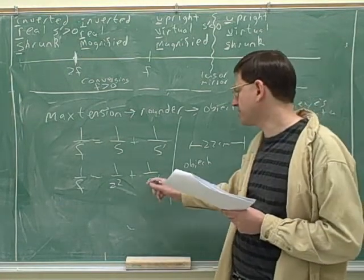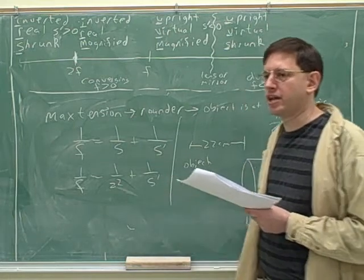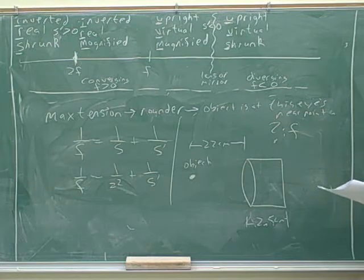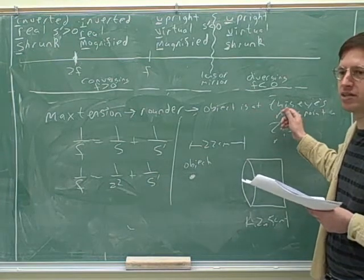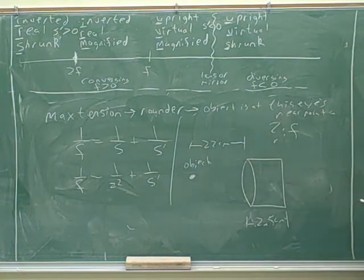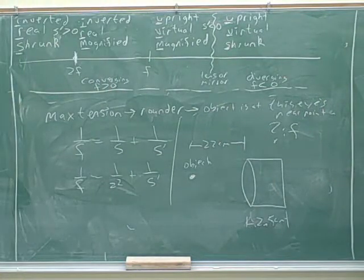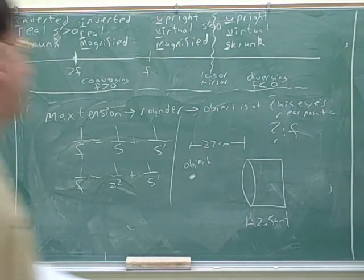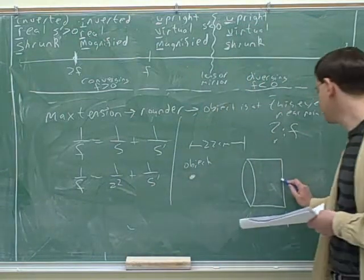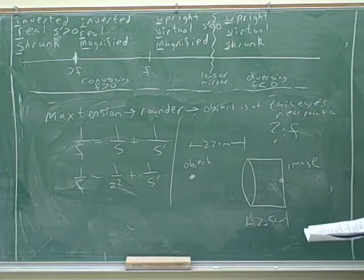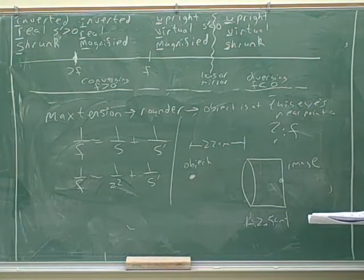Now, what we're struggling with is putting in something for S prime. We want to know where we want the image to be. Remember that this person can actually see well at this near point - they can see well, so where's the image? We want the image at 22 plus 2.5. Where do we want the image to form? We want the image to form on the retina - the whole point of clear vision is we want the image to form on the retina. So, what is S prime going to be?